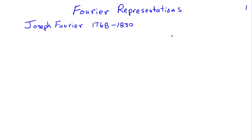Let's look at Fourier representations. These are named after Joseph Fourier, who was a French mathematician and physicist that lived in the late 1700s and early 1800s. The basic idea behind Fourier representations is that we're going to look at ways of describing an arbitrary signal as a sum of sinusoids. I use the term sum in a generic sense, also referring to an integral, because an integral is nothing more than a sum.